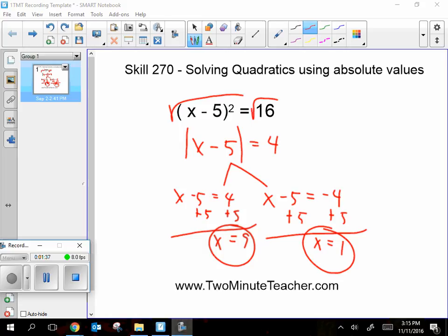If I could double check that, I can take the 9, stick it in here, and I'd have 9 minus 5 is 4, 4 squared is 16. And this one, if I stick the 1 in here, 1 minus 5 is negative 4, negative 4 squared is 16. So those are my two answers.